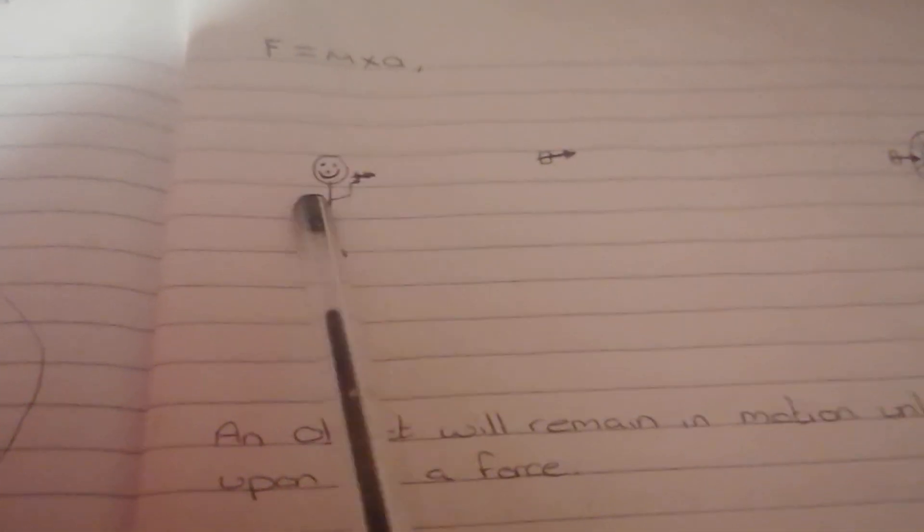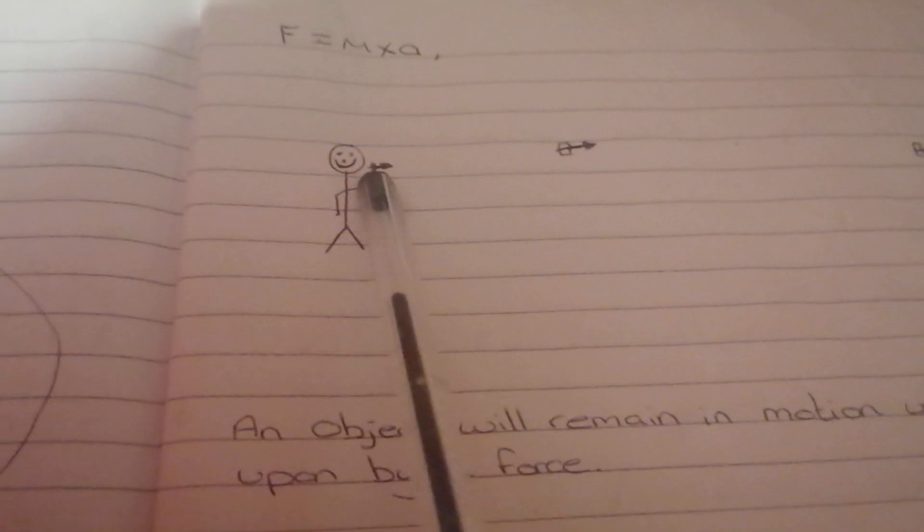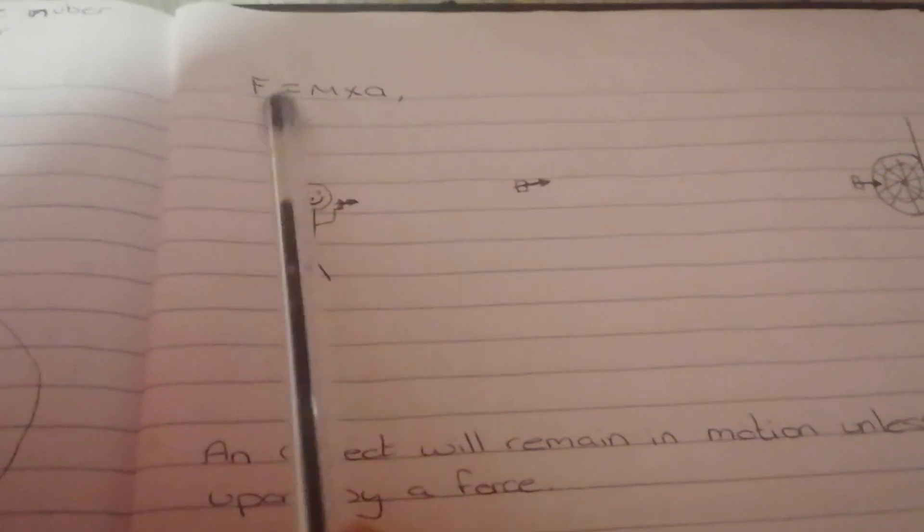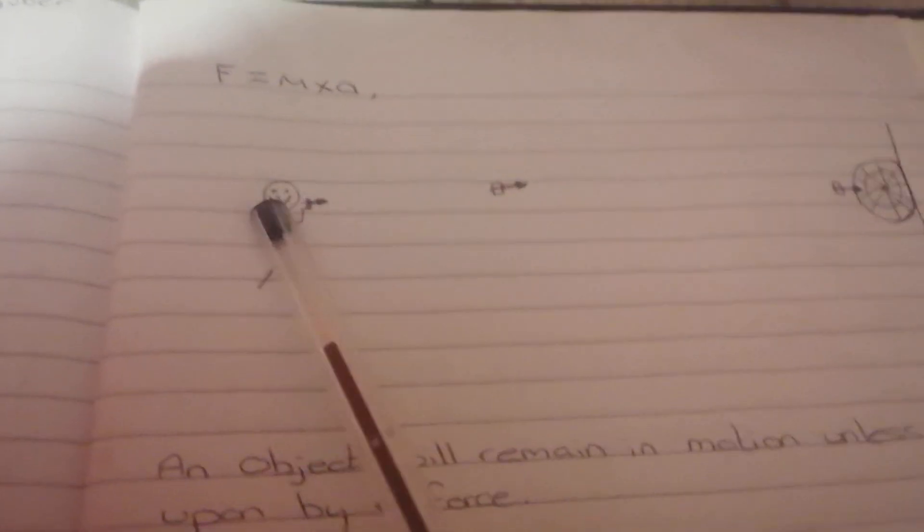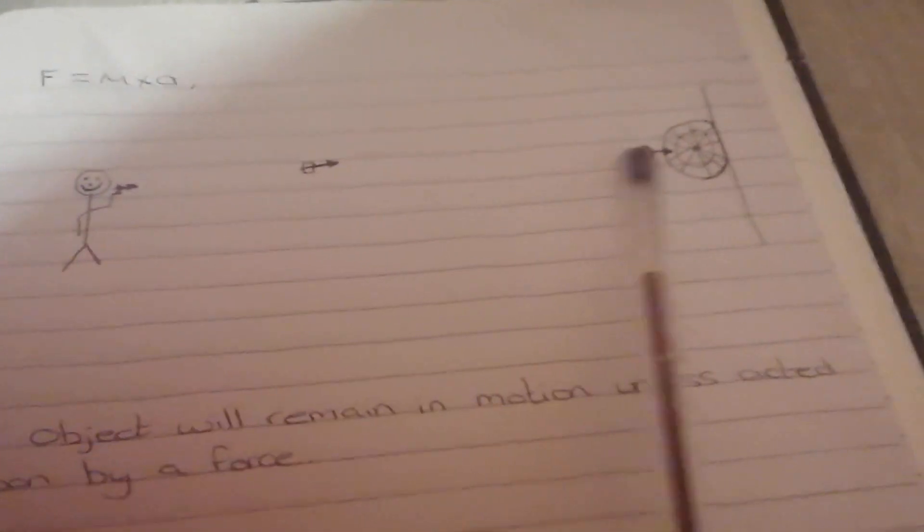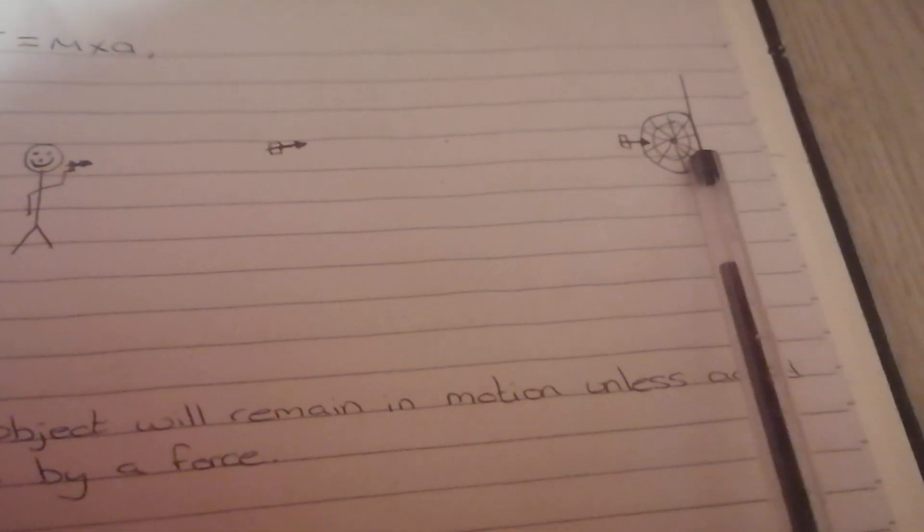Okay, next problem I have. This is a man, he has a dart, the dart has mass, he throws a dart, the dart now has mass and acceleration, so therefore there's a force. The dart hits the dart board, it stops. One of Newton's laws says an object will remain in motion unless acted upon by force. So an object will remain in motion unless acted upon by force. That must mean that there's a force here.